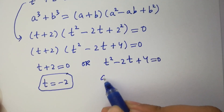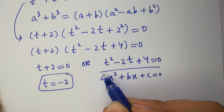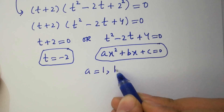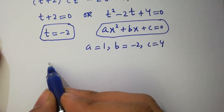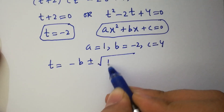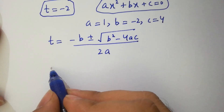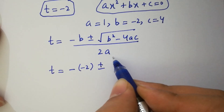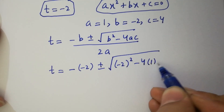The remaining factor t² − 2t + 4 = 0 is a quadratic equation of the form Ax² + Bx + C = 0. By comparing, A = 1, B = −2, and C = 4. Applying the quadratic formula: t = (−B ± √(B² − 4AC)) / 2A.